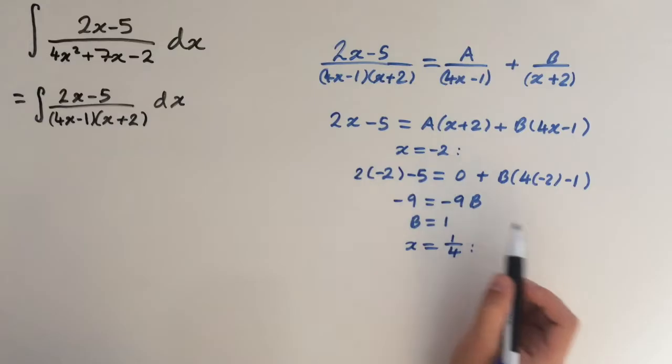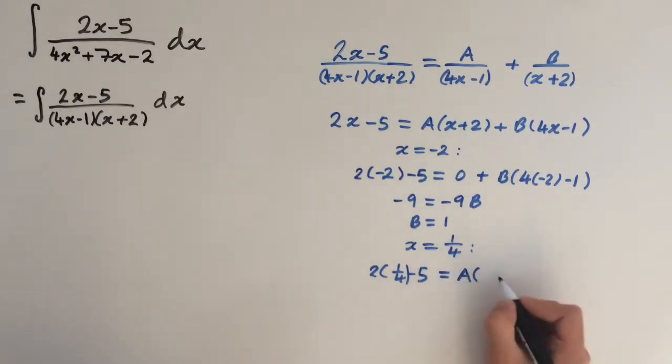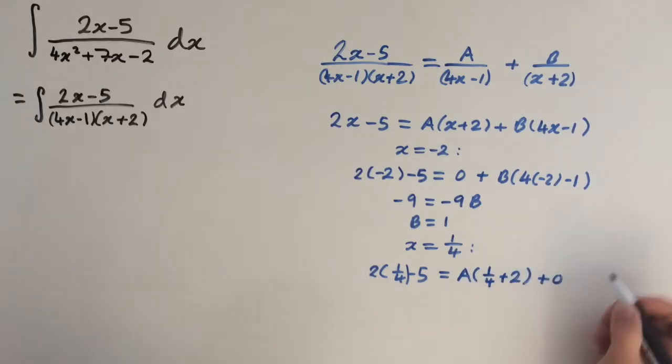And now we sub it in. So 2 times 1 over 4 minus 5. This equals A times a quarter plus 2 plus 0, because this is going to equal 0.